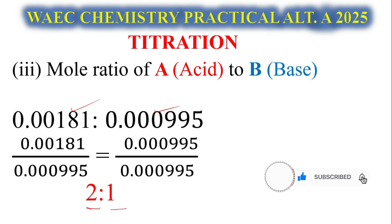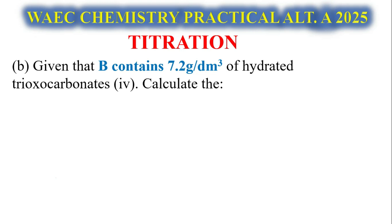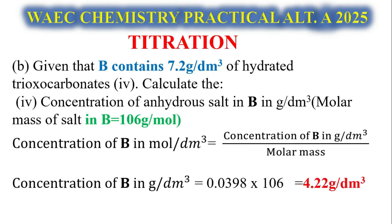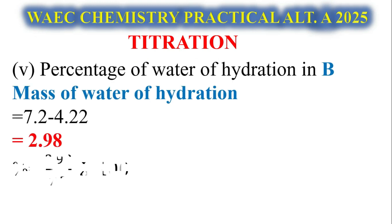Let's proceed to the B part. Given that B contains 7.2 grams per dm³, calculate the concentration of anhydrous B in grams per dm³. We already have molar mass given to be 106. Use that formula, cross-multiply. You've been given this value, you get 4.2 grams per dm³ of B. Percentage of water of hydration of B: we're given this from the question, minus the value obtained, you have 2.98 grams as a mass.